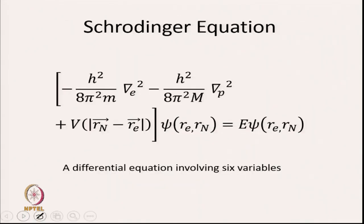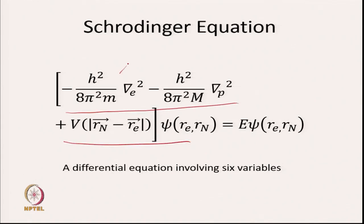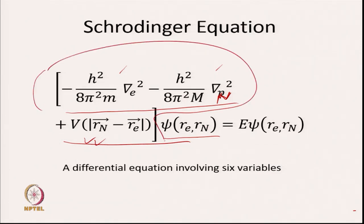Now we know how to write both the kinetic and potential energy operators; let us put them into the Schrödinger equation. We have the kinetic energy operator for the electron, the kinetic energy operator for the nucleus, and the potential energy V as a function of R_n minus R_e, applied to the wave function which is a function of R_e and R_n. When this Hamiltonian is applied on the wave function we get the energy. However, this differential equation involves 6 variables, so we need to do some simplification.